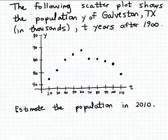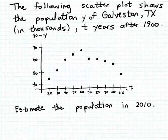The following scatter plot shows us the population of Galveston, Texas, measured in thousands, and we're labeling that value y. That population y is measured t years after 1900, so the variable t represents the elapsed years after 1900. The t values, the elapsed years, are plotted along the horizontal axis, and the y values, the population values, are plotted along the vertical axis.